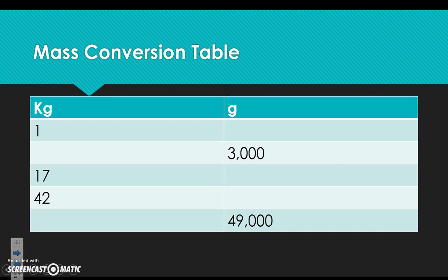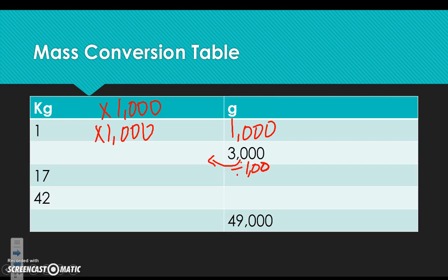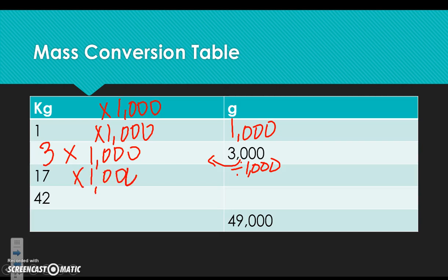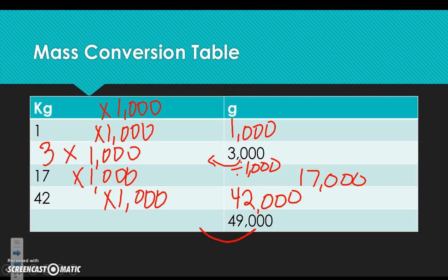Converting mass: kilograms to grams, multiply by 1,000 because a kilogram is 1,000 times greater than a gram. 1 times 1,000 is 1,000. Going backwards, divide — check: 3 times 1,000 is 3,000. 17 times 1,000 is 17,000. 42 times 1,000 is 42,000. Dividing: 49 times 1,000 is 49,000.